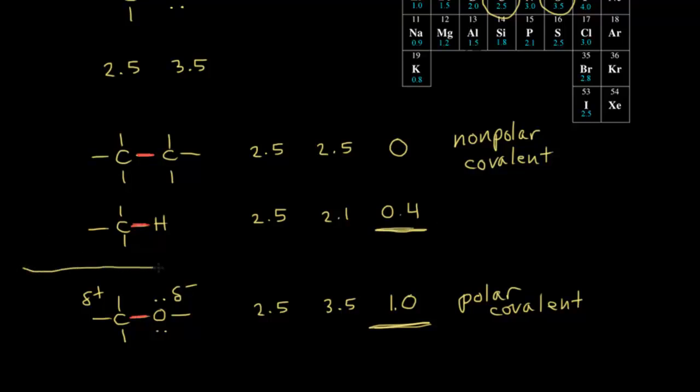Somewhere in between must be the cutoff between nonpolar and polar covalent bonds. Most textbooks place that at approximately 0.5. If the difference in electronegativity is greater than 0.5, consider it mostly a polar covalent bond; less than 0.5 is nonpolar. Note that we're using the Pauling scale, and there are several different scales, so these numbers are relative differences, not absolute values.